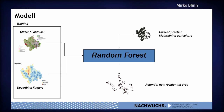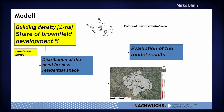With this data, we train the random forest using the current land use and the describing factors. Once trained, we give the random forest the information from the different scenarios — either the current practice scenario or the maintaining agriculture scenario, which protects very high value agricultural areas. After the random forest process, we get a map of potential new residential area grid cells, and then distribute the needed new residential spaces across those potential areas.